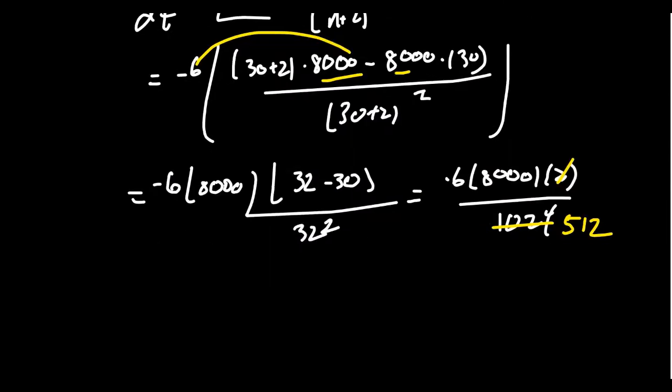I'm going to put this in a calculator. Don't worry about the arithmetic too much, but we're going to get if we take 8,000 divided by 512, we end up with 15.625. Pause there for a moment because I want us to understand what is this measuring. This was our dR/dN when N was equal to 30.